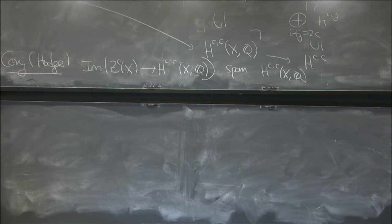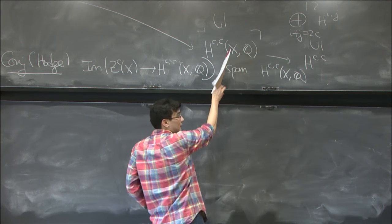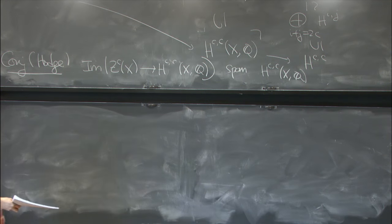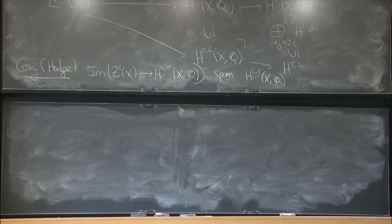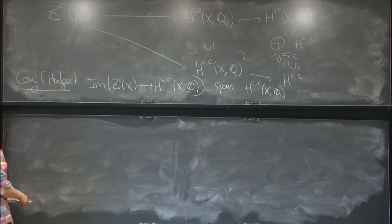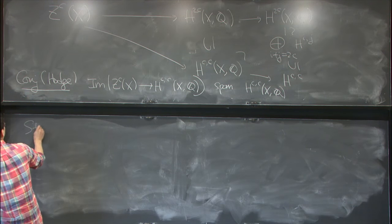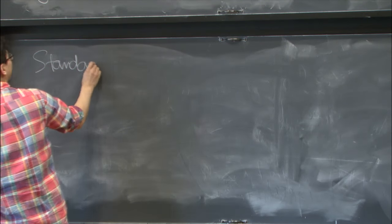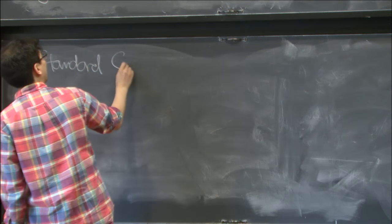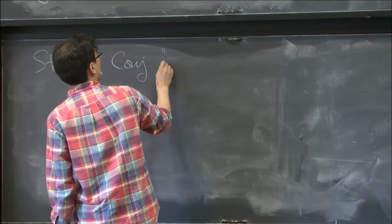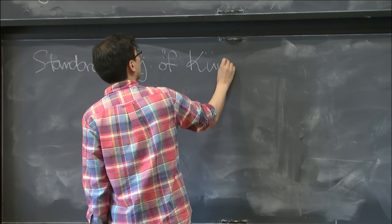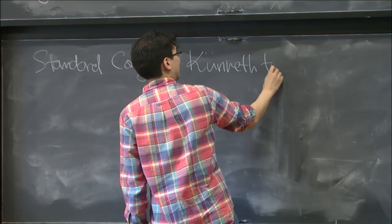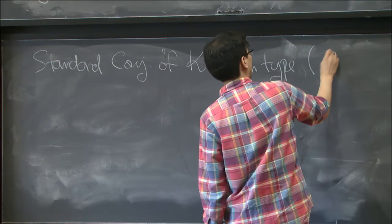So if you want to test the Hodge conjecture, you have to start with some class in this group, and try to express it as a linear combination of the direct cycles. So one such examples are given by the so-called Künneth projectors. So let me recall what the standard conjecture of Künneth type is. And this is due to Grothendieck.